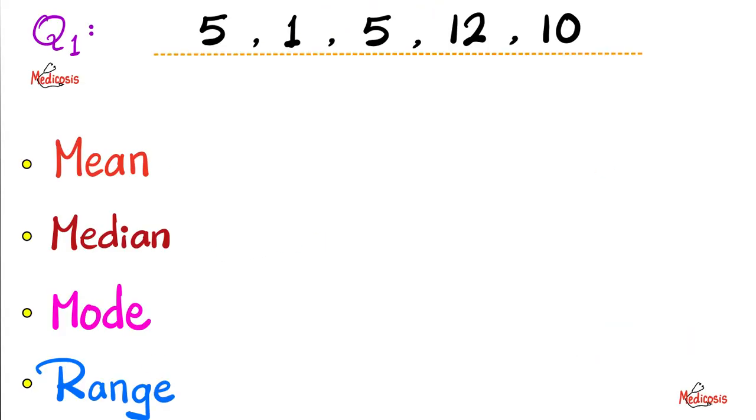So, let's define our terms by using this example. Here we have a set of 5 numbers: 5, 1, 5, 12, and 10. Let's try to calculate the mean, the median, the mode, and the range.